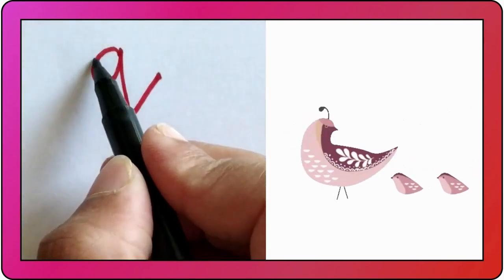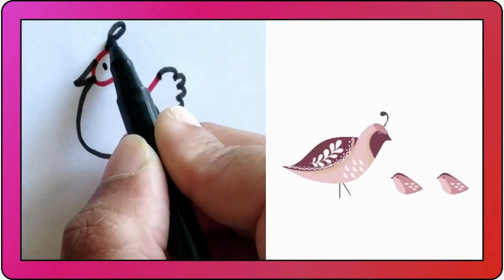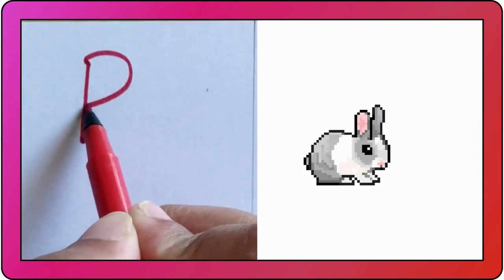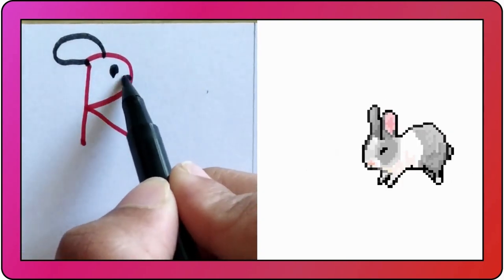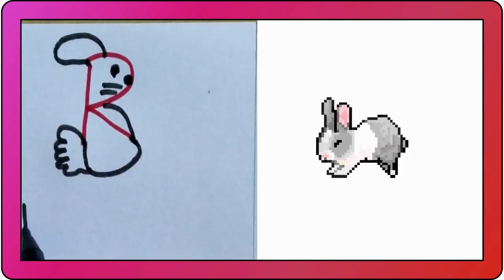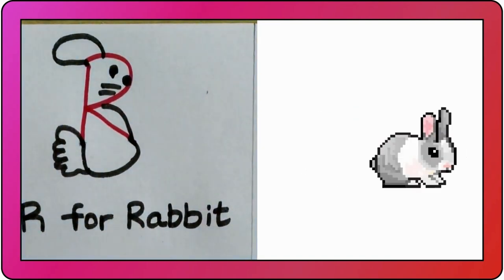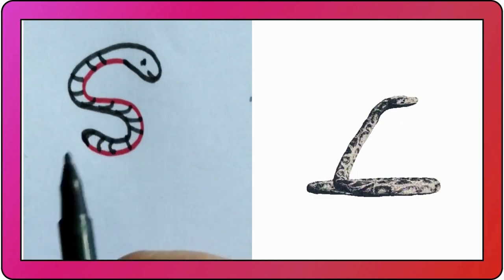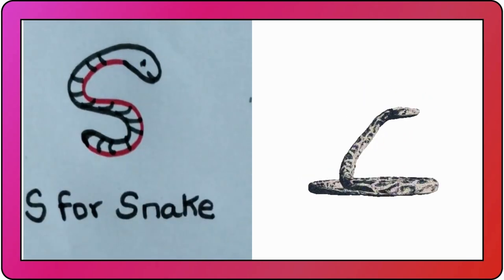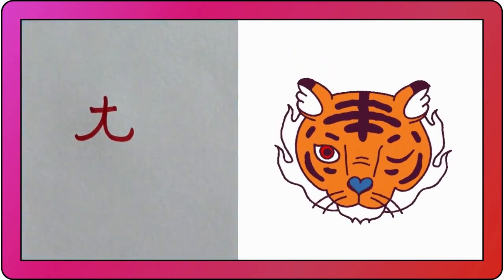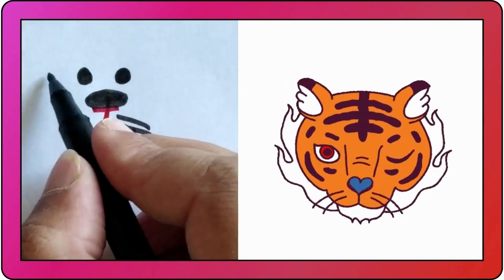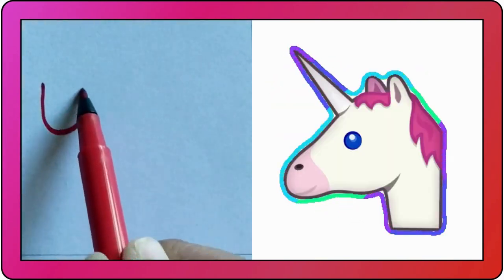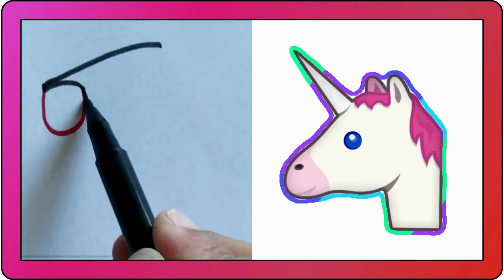Q for Queen. R for Rabbit. S for Snake. T for Tiger. U for Unicorn.